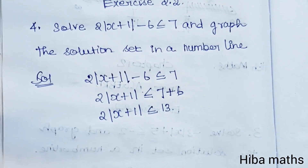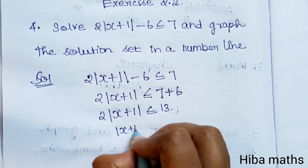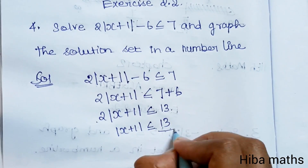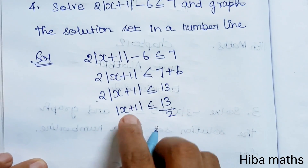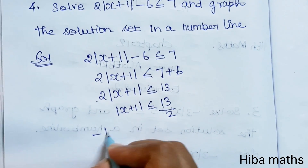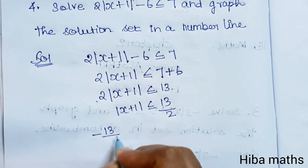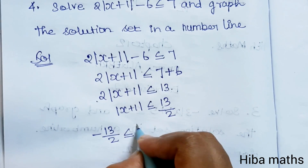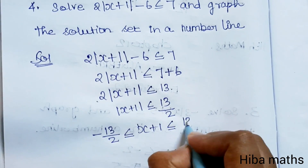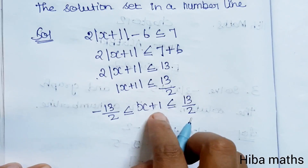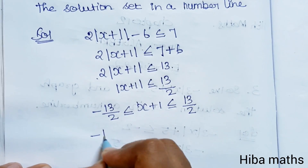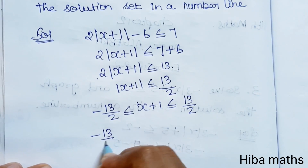Dividing both sides by 2: modulus of x plus 1 is less than or equal to 13 by 2. Then removing plus 1 by subtracting 1 from both sides: x is less than or equal to 13 by 2 minus 1.